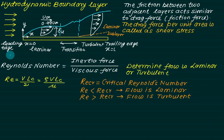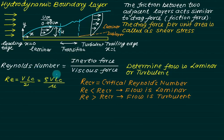In the last lecture we have seen how the boundary layer is developed and we have to define the Reynolds number to identify whether the flow is laminar, turbulent, or in transition. Reynolds number is defined as the inertia force upon viscous force and is usually used to determine whether the flow is laminar or turbulent.